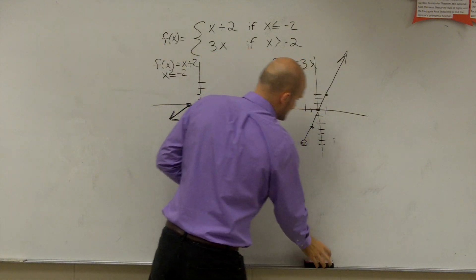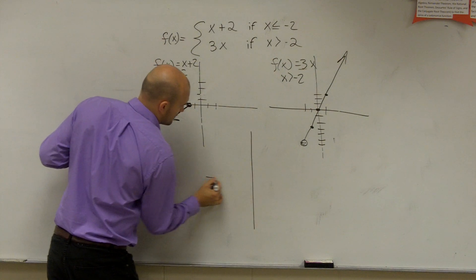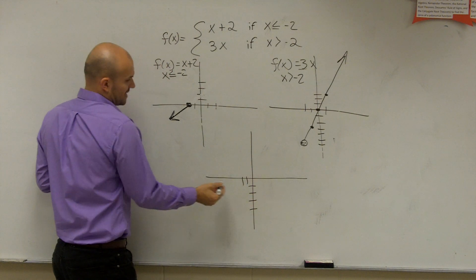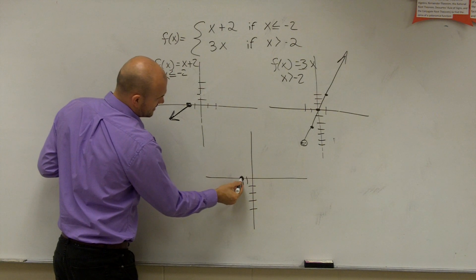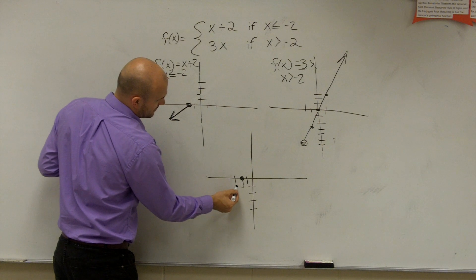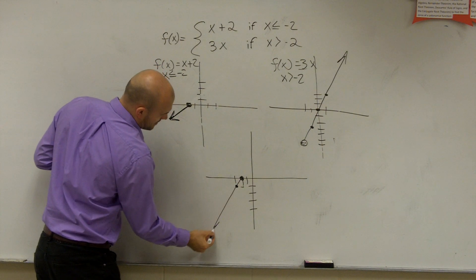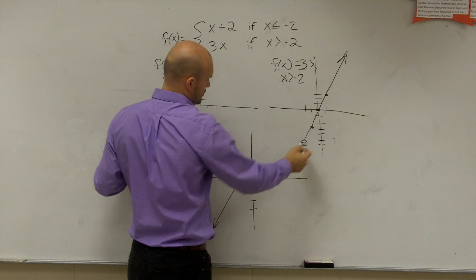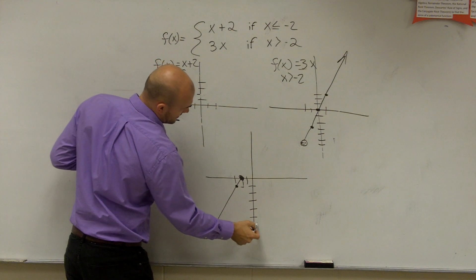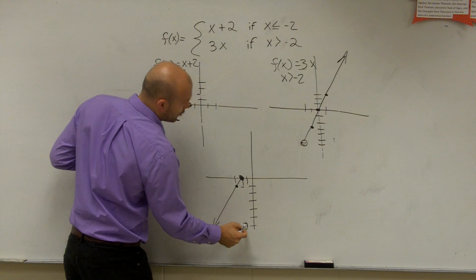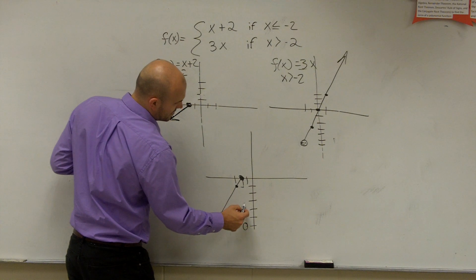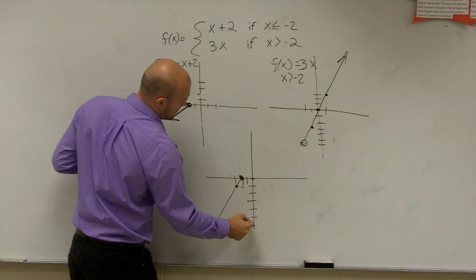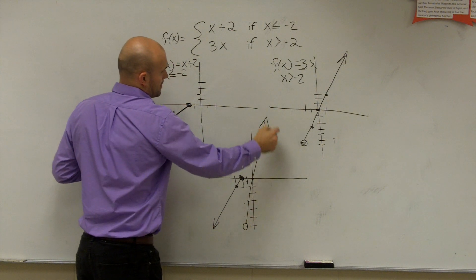I'm going to graph them on the same set of axes. At negative 2, going down 1 over 1 — the first piece looks something like this. Over here for the second piece, the point is at negative 2 on the x-axis, with a slope of rise 3 over 1 — this is going to be an open dot with a slope of 3 over 1 going up to the right. And there it is — the combined piecewise graph.